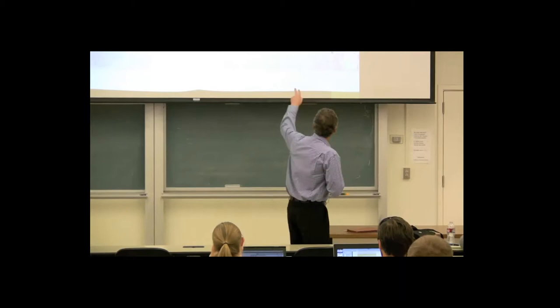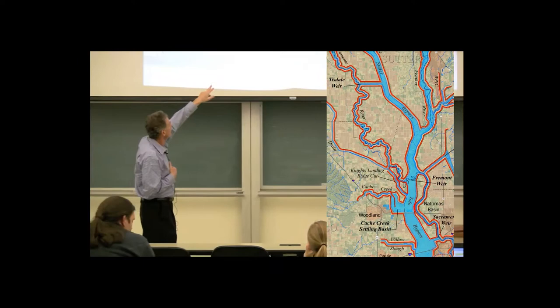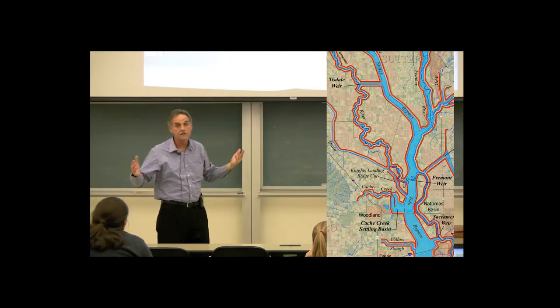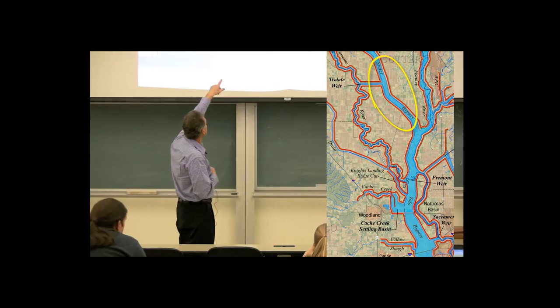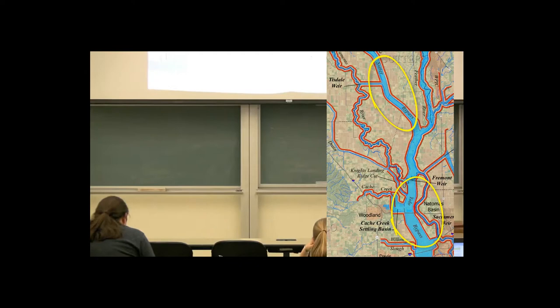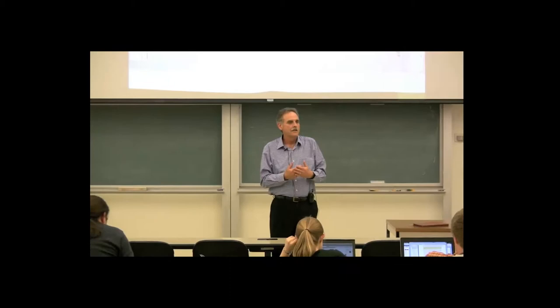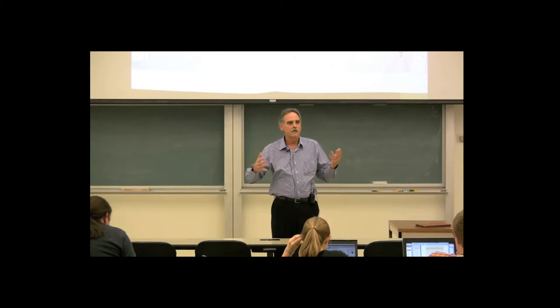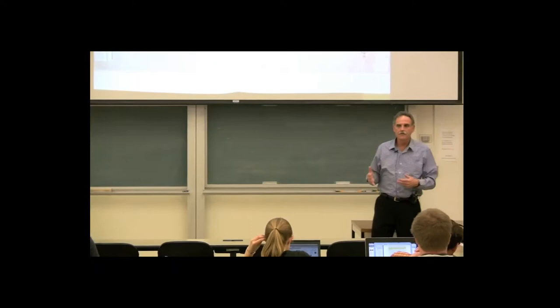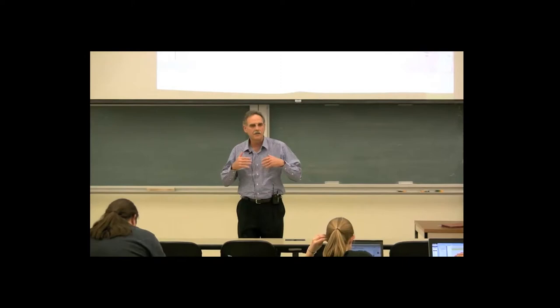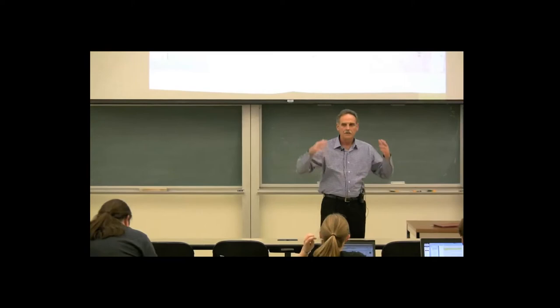That's what gave rise to those big blue areas there, which are the bypass systems. The Sutter Bypass, and then in particular, the Yola Bypass, which can be thought of as sort of common areas for the system. The question was, who would build and maintain these common areas? And that's really where the notion that the state felt it appropriate to step up and do that.